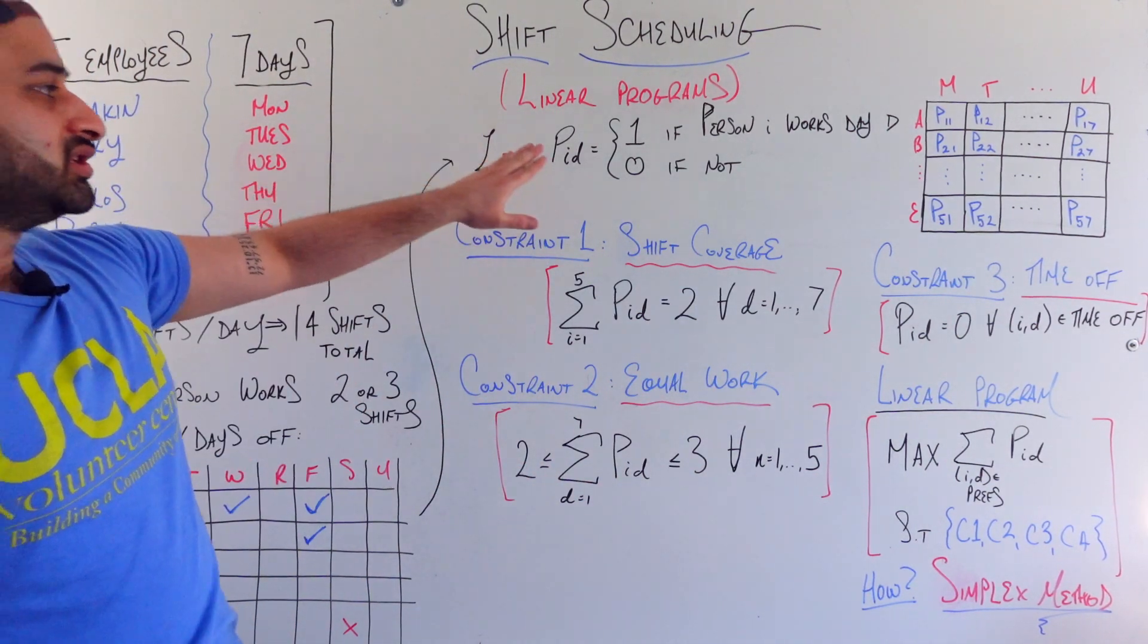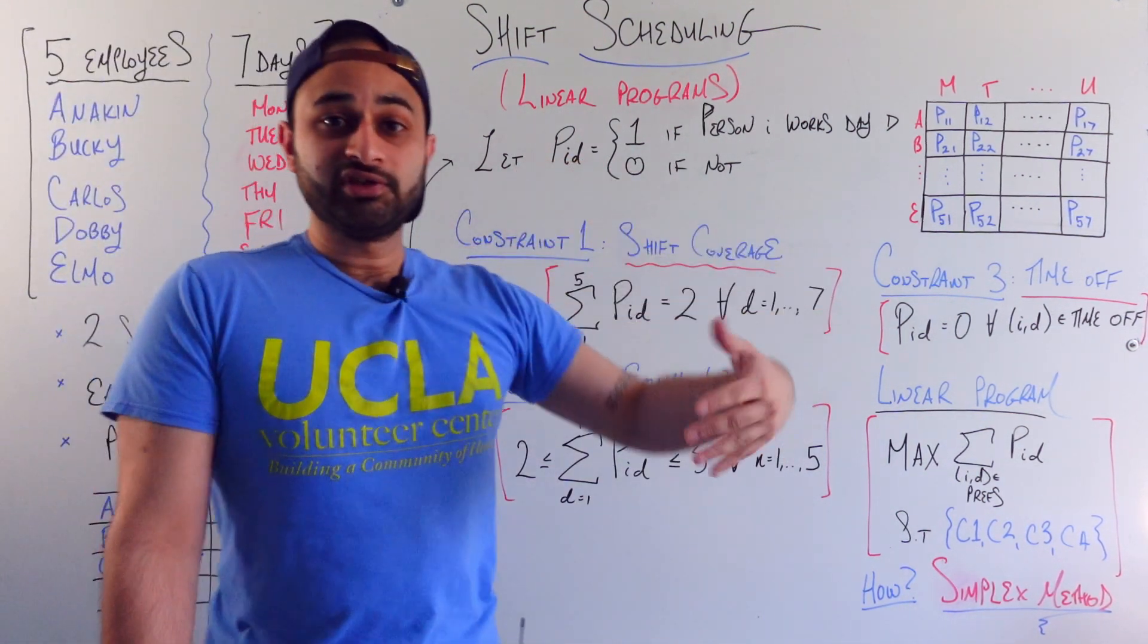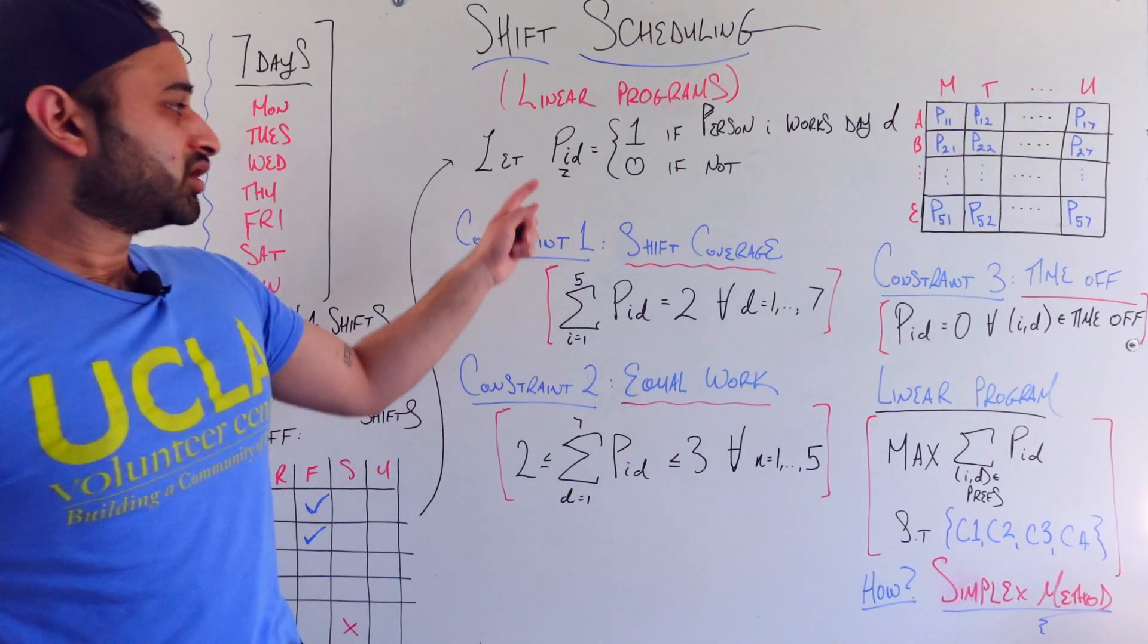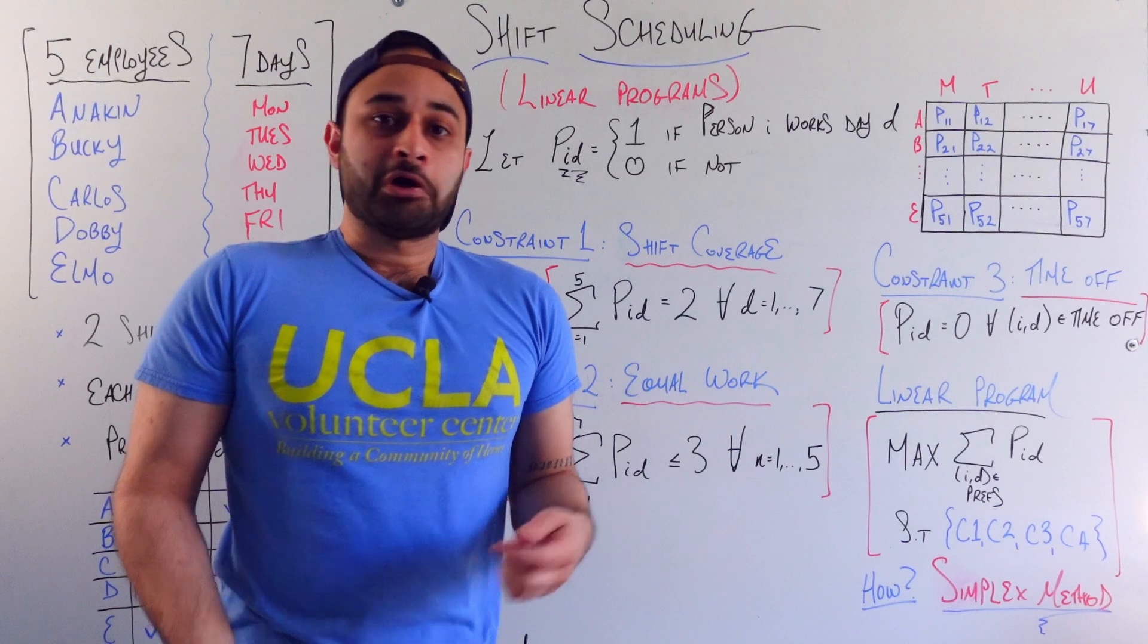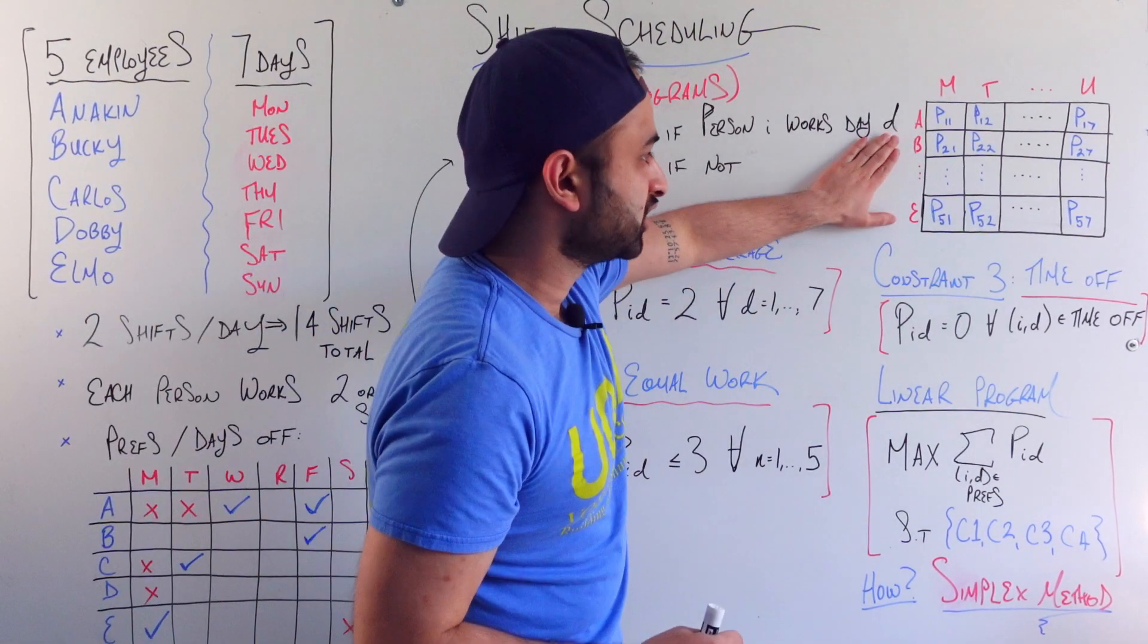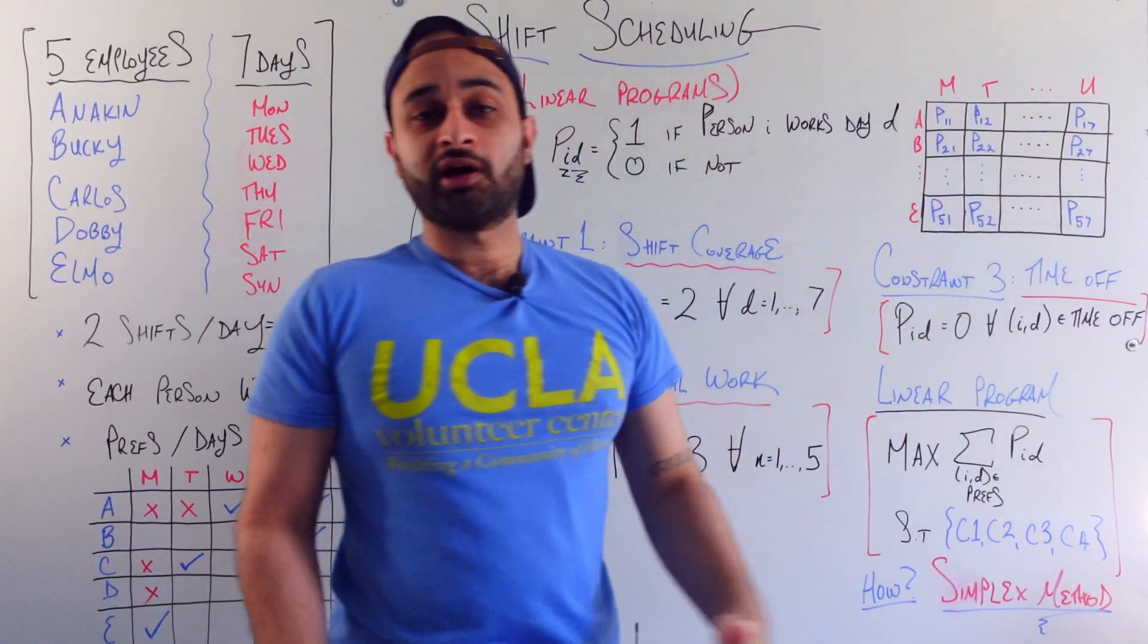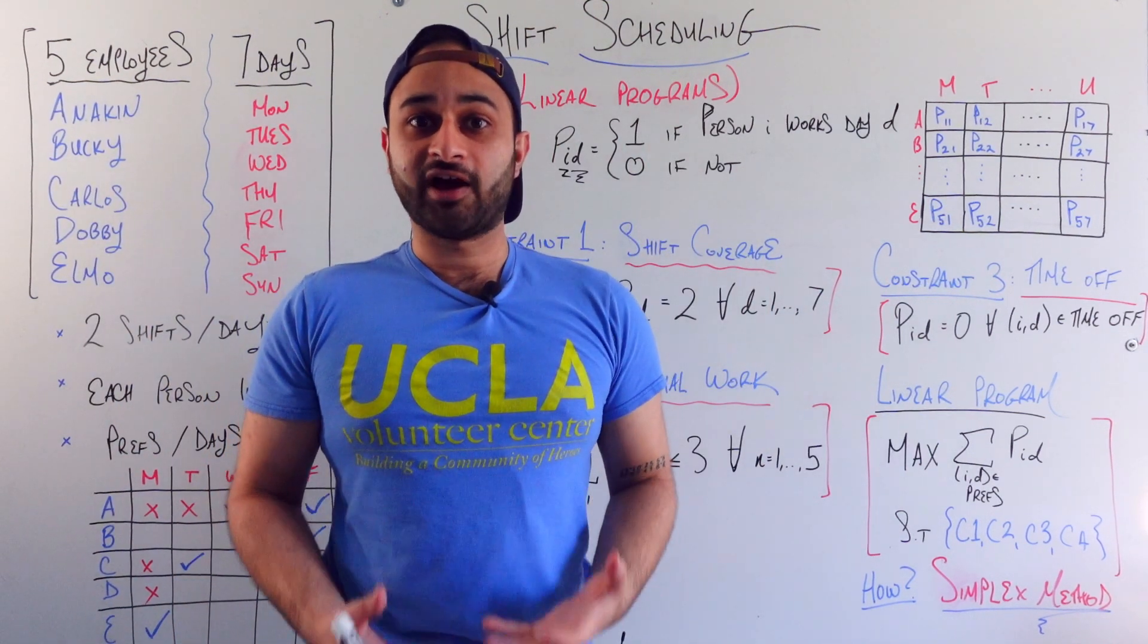So our story starts here. We're going to define a bunch of these variables, binary variables, called P underscore id. And these variables are one if person i works on day d. So if person i is going to be scheduled to work on day d, then this variable becomes one, otherwise it's not. And it turns out by just reframing this problem in terms of these variables, which you can collect in a matrix that looks like this. So how many of these variables are there total? There are as many variables as there are unique combinations of employee and day. So in our case five times seven or thirty-five distinct binary variables. We can frame the entire problem in terms of these thirty-five binary variables.